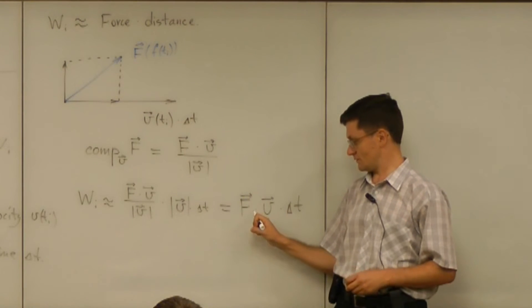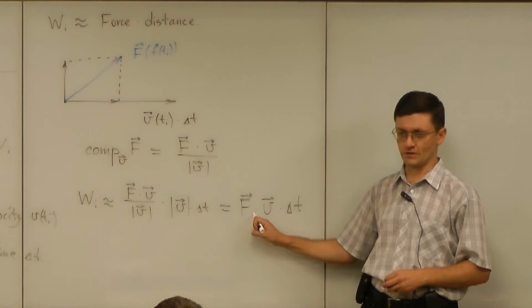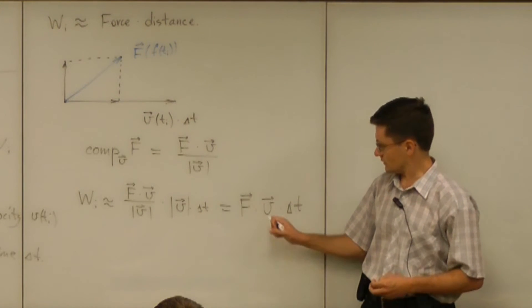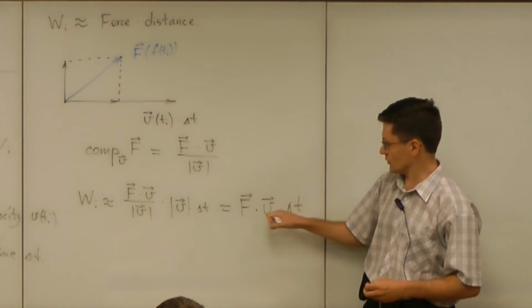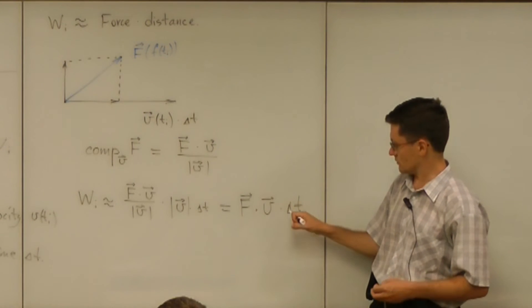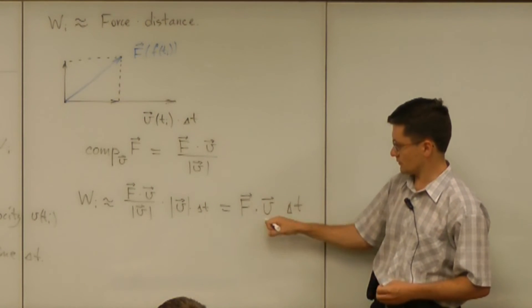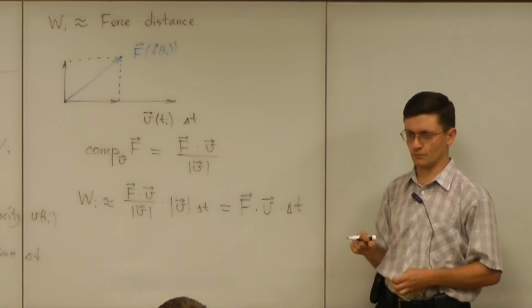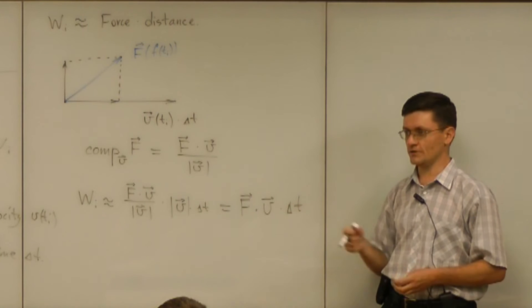And the result is then the force dot product velocity times delta T. And now I use dots for both multiplications. But we have to distinguish them further. And in fact, it doesn't matter which order you do this multiplication. Whether you multiply velocity by that number first and then dot product. Or dot product then by a number because of linearity.